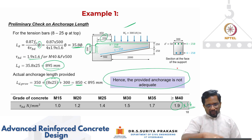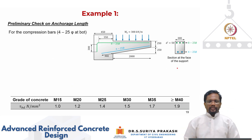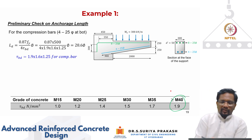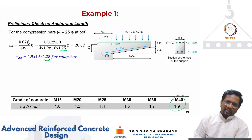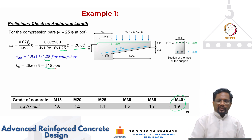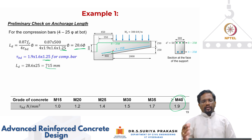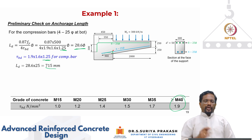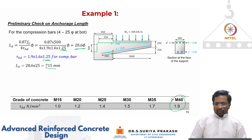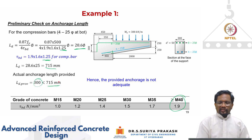For compression bars, the same M40 concrete gives tau_bd = 1.9. However, for compression there are no cracks and end bearing develops as well, so the code allows an additional 25% increase. The development length reduces to 28.6 times the diameter, which works out to 715 mm. But only 300 mm is provided, so it is short by a significant amount. Provided anchorage is not adequate.